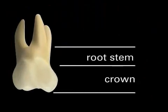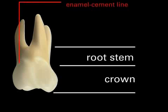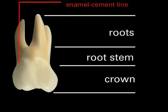Here you can see a tooth with a crown going over into the root stem. In the picture it is easy to see this transitional zone, called the enamel cement line. The roots of a tooth are not covered in enamel, as is the crown, but with a material similar to bone, the root cement. The root stem then splits into the roots, and the area where this takes place is called the furcation.